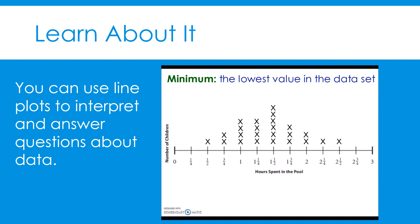First, we will find the minimum of this line plot. The minimum is the lowest value in the data set. Let's look at the number line underneath the line plot. I see that one-half is the lowest value that still has a data point — it still has an X. Therefore, one-half is the minimum.